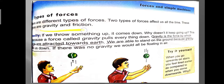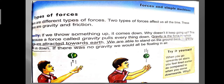Gravity is a very common and well-known force of attraction. Have you observed that things are always falling down? An apple falling from a tree always falls down. A ball thrown into the air comes back to the floor. Books and clothes fall down to the earth. If you throw something up, it comes down — why doesn't it keep going up into space?